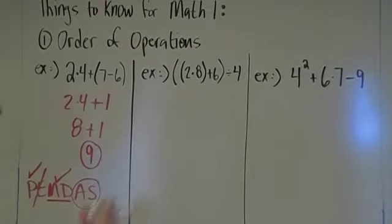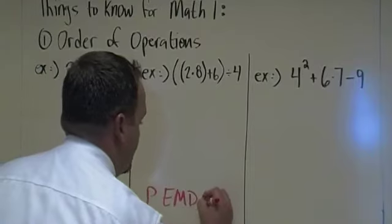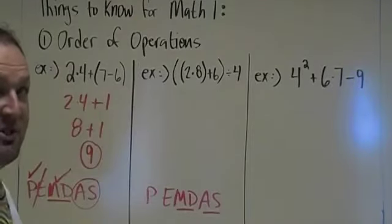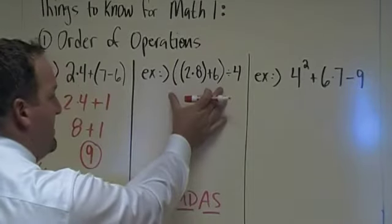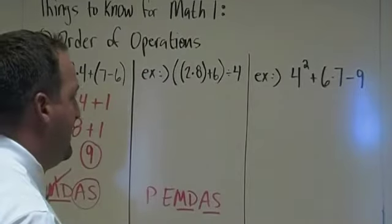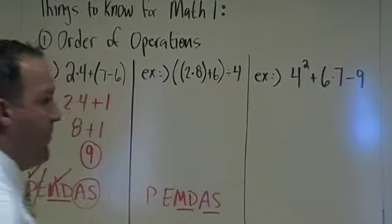Same thing in the next problem. I'm going to write down again. Please excuse my dear Aunt Sally. Remember that multiplication and division and addition and subtraction go together. We have a problem here. It's parentheses and then another parentheses inside of that. It says 2 times 8 plus 6, close parentheses, divide by 4.